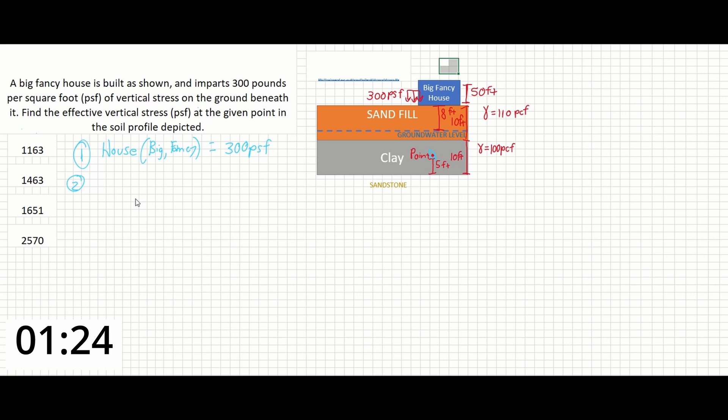Next, we need to find the effective stress in just the dry sand. The section of sand to the depth of the groundwater level will be dry and that's 8 feet. The effective vertical stress for this layer is the unit weight of the dry sand times the depth of the dry sand, which gives us 880 pounds per square foot.